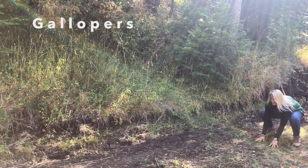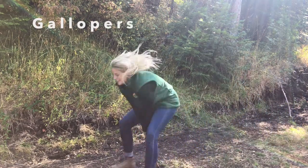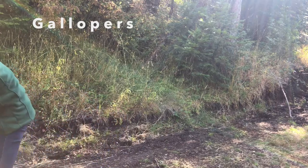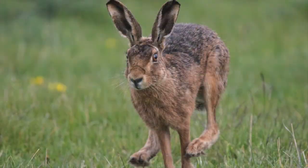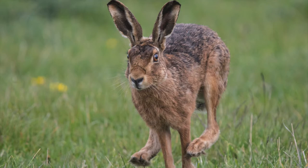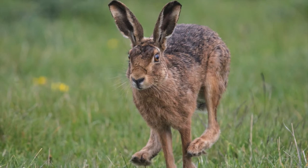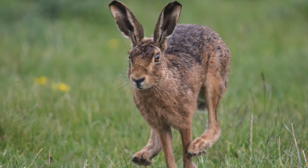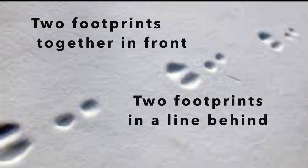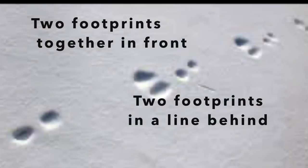Gallopers hop with their two front feet first and then their two back feet land in front of their front feet. Examples are squirrels, chipmunks, shrews, moles, and most commonly hares. Here is an example of what some of their tracks look like.